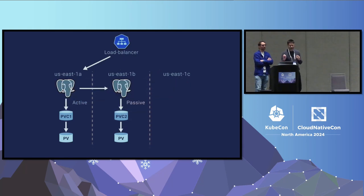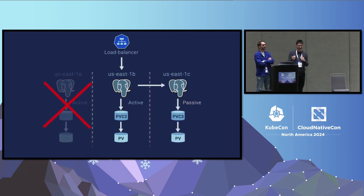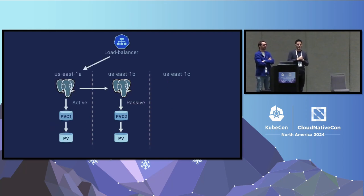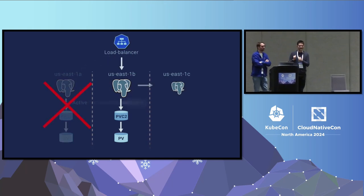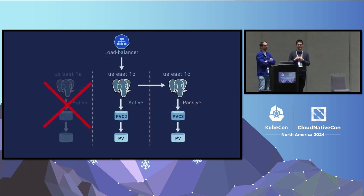If you have a more traditional database, every decent database has at least active-passive replication. There is one active — in this case Postgres — that handles all the traffic and all the queries, and it synchronously writes all the data into passive replicas. When the active dies, one of the passive replicas becomes active, and the service continues.